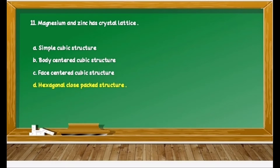Question 31 is on the crystal lattice concept: Magnesium and zinc have dash dash crystal lattice. Options are: A) simple cubic structure, B) body-centered cubic structure, C) face-centered cubic structure, D) hexagonal close-packed structure. We know that magnesium and zinc are examples of hexagonal close-packed structure. Therefore, option D is correct.